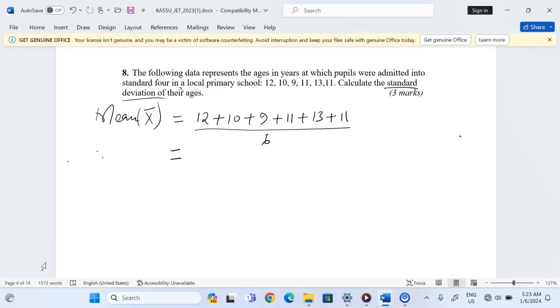When I get the sum, this is going to be 22, then 31, 42, 55, 66. So 66 divided by six gives us 11. So 11 years is the mean.